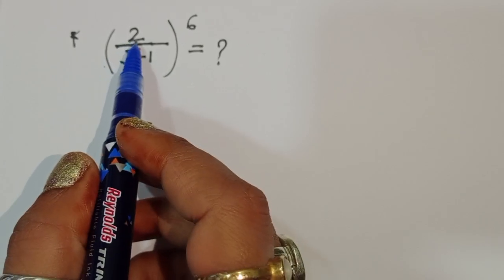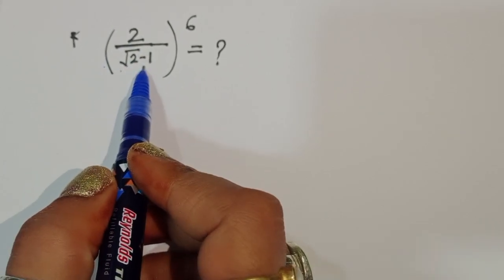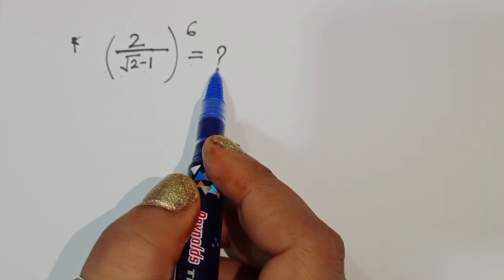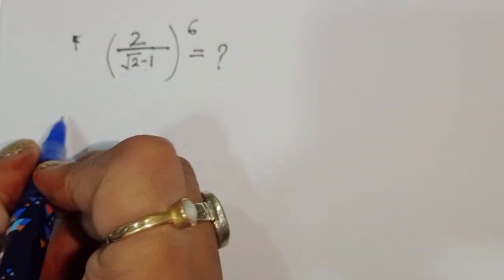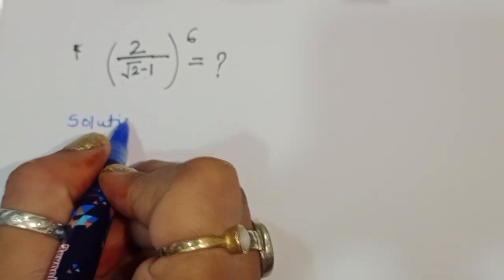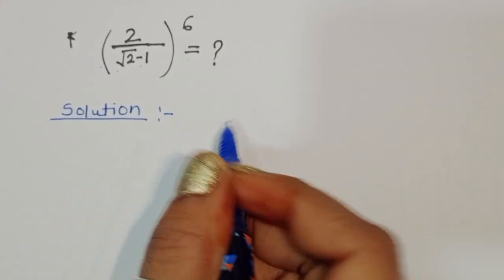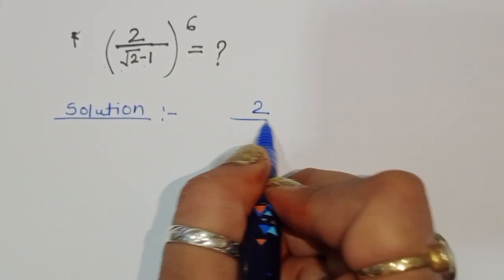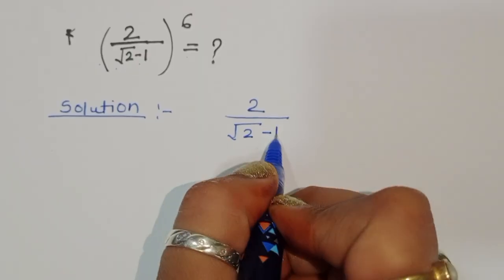We are given 2 divided by square root of 2 minus 1, to the whole power 6. We have to find out the value of this term. Let's see the solution.